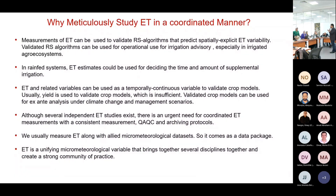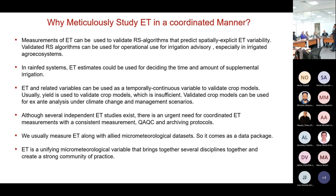Even in rain-fed systems, we may need information on evapotranspiration. Of course, in irrigated systems, we need evapotranspiration very much because we are adding water from rivers. ET-related variables can also be used as temporally continuous variables for validating crop models, which are important for understanding complex processes of nature and for studying scenarios of future climate change or management changes.